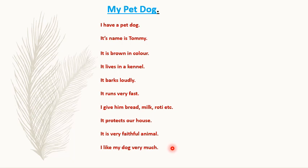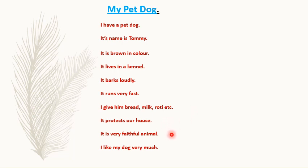Now write these 10 lines in your notebook. Once again we'll repeat it: I have a pet dog. Its name is Tommy. It is brown in color. It lives in a kennel. It barks loudly. It runs very fast. I give him bread, milk, roti, etc. It protects our house. It is a very faithful animal. I like my dog very much.